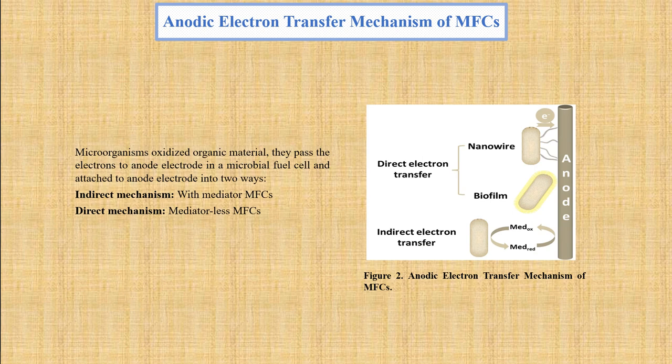The anodic electron transfer mechanism of microbial fuel cells: microorganisms oxidize organic material and pass electrons to the anode electrode in two ways. In the indirect electron transfer mechanism, microorganisms have no electrochemically active protein for transferring electrons to the anode, so they need external agents called mediators. Due to the high cost, short lifetime, and toxicity of these mediators, it is crucial to develop mediator-less microbial fuel cells. In the direct electron transfer mechanism, electron transport relies mainly on metal-reducing bacteria instead of exogenous electron carriers, which transport electrons to the anode through nanowire mechanisms or biofilm formation. Figure 2 represents the anodic electron transfer mechanism.